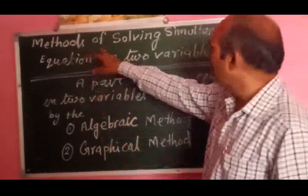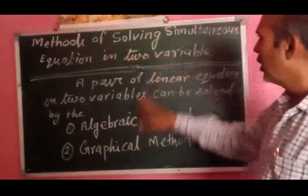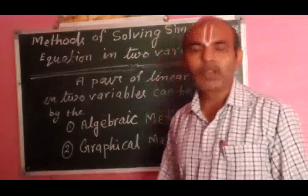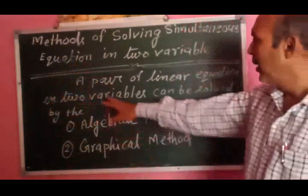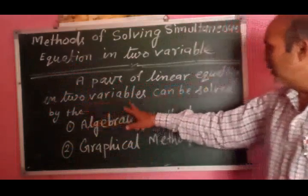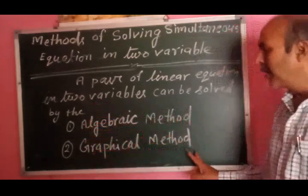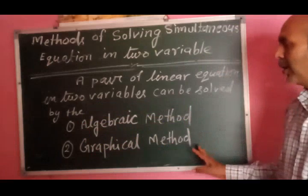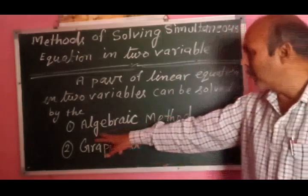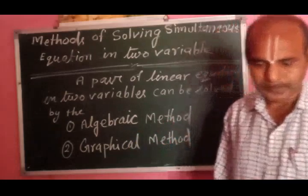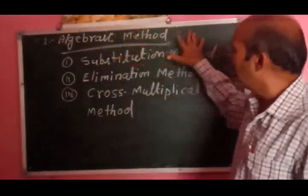Method of solving simultaneous equations in two variables — इस प्रकार से आप इन समीकरणों को solve करेंगे, तो इसके method कितने हैं, यह आपको बताया जा रहा है. A pair of linear equations in two variables can be solved by the algebraic method and graphical method.